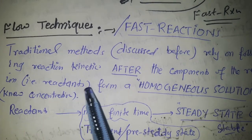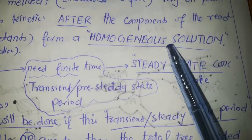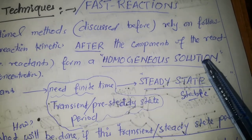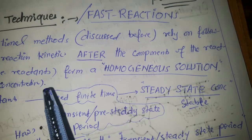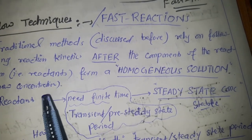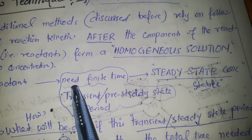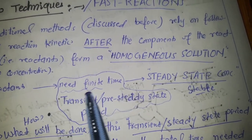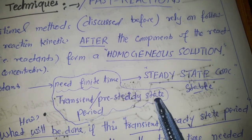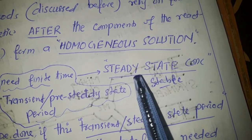When we have a homogeneous mixture of reactants, we can follow the kinetics of those reactions. However, reactants require a finite time to form a homogeneous solution — this is known as the transient period or pre-steady-state period, because this time is required before a steady state is achieved.